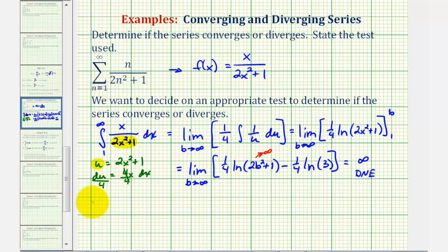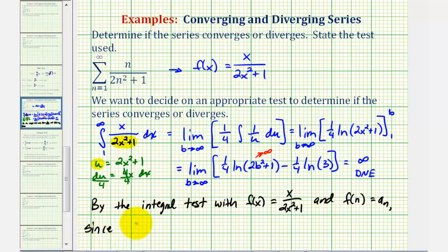By the integral test, with f of x equal to x divided by the quantity two x squared plus one, and f of n is equal to a sub n, since the integral from one to infinity of f of x dx diverges, the series diverges.